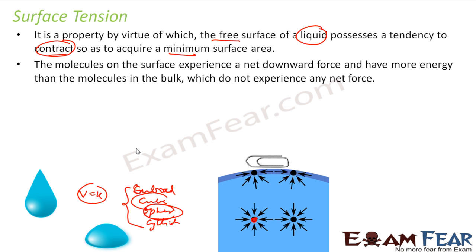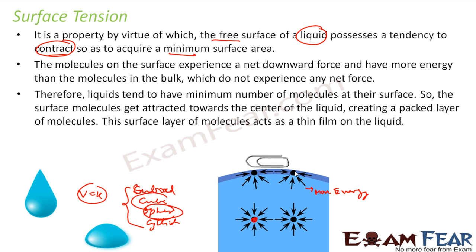So as I explained, the molecules of the surface experience a net downward force and have more energy than the molecules in the bulk. They have more energy and want to come down. Therefore, these liquids tend to have a minimum number of molecules at the surface. The molecules inside are all happy molecules, but the surface molecules are sad molecules.